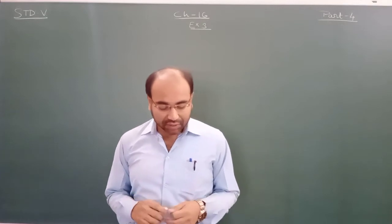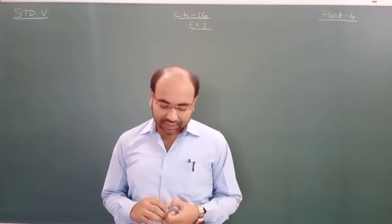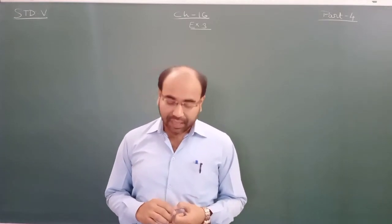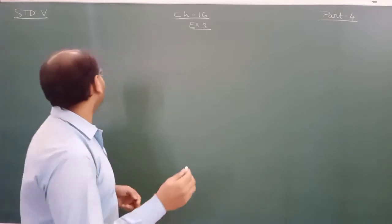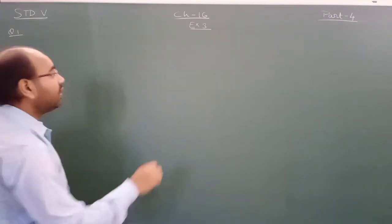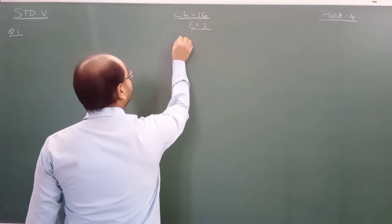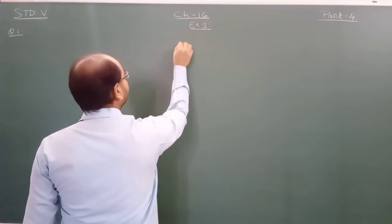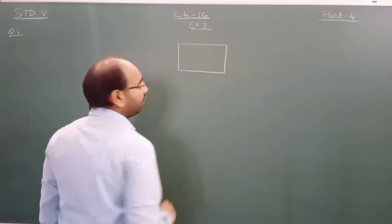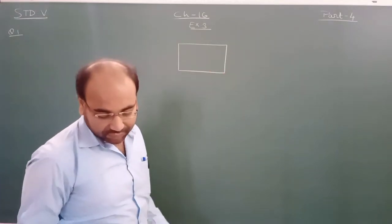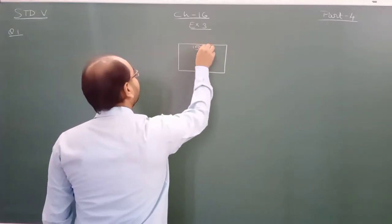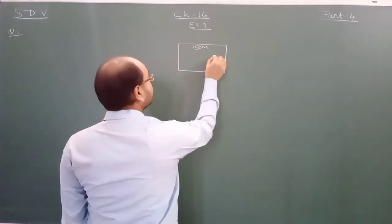The first question is: a rectangular field of 150 meter by 100 meter has a 10 meter path around it — find the area of the path. For this type of question you always have to draw a figure. So according to the question, one rectangular field is given whose length is 150 meter and breadth is 100 meter.